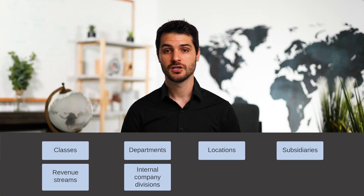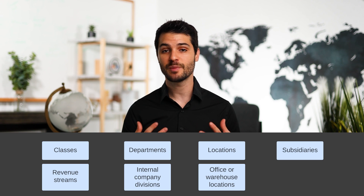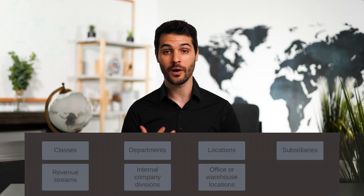Thirdly, we have locations — your office locations and warehouse locations. This is especially important for companies dealing in goods, shipping or warehousing them. But even service-based companies might have multiple offices. For example, if you provide consulting services and have 10 offices across the US, each of those will be its own location recorded in NetSuite.